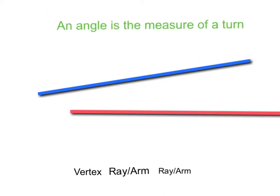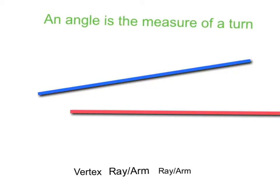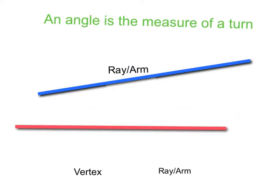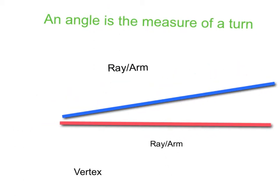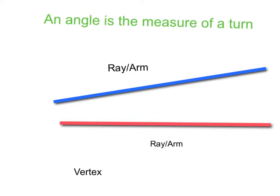We know that an angle is the measure of the turn. And to have an angle, we need two straight lines, or we can call them rays or arms, that come together and meet at a certain point. Here you go, make these two meet together.